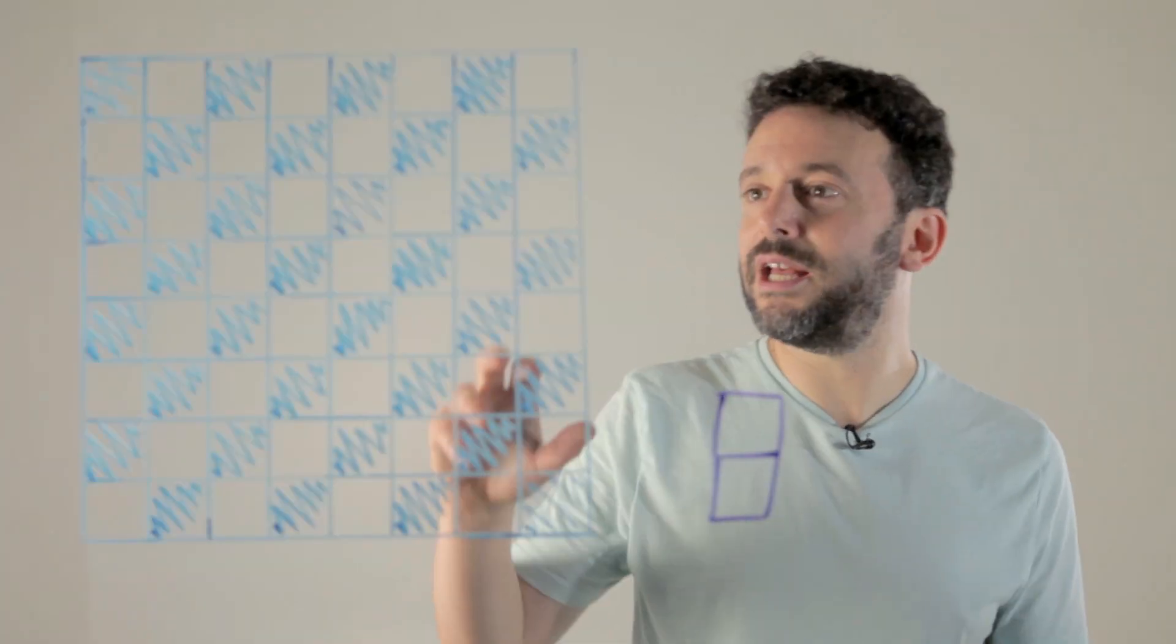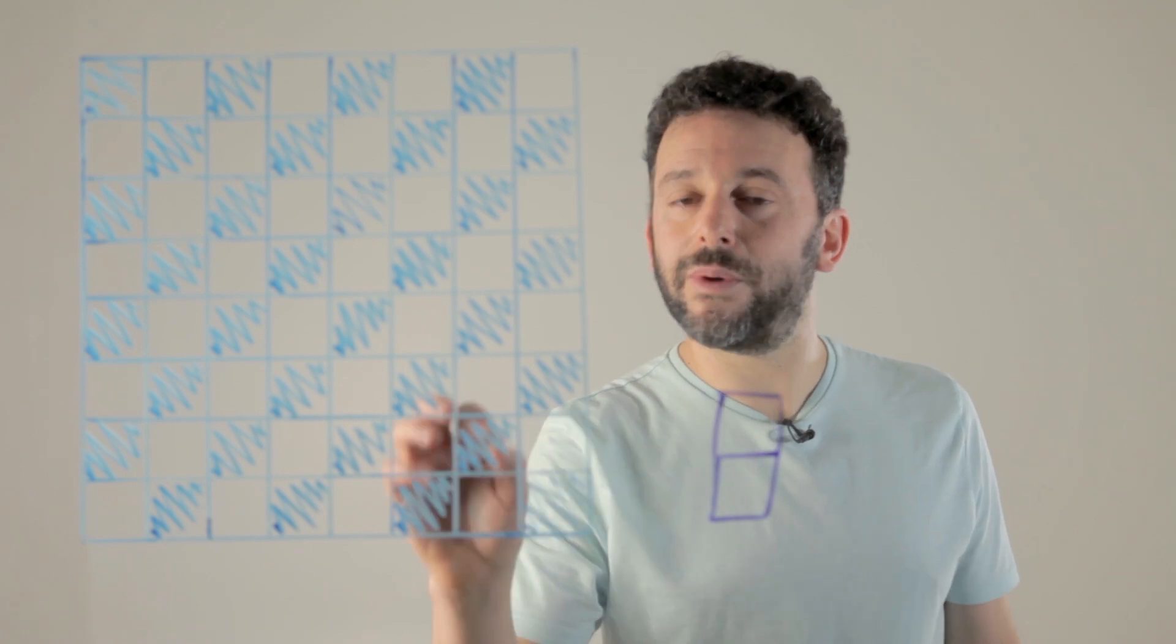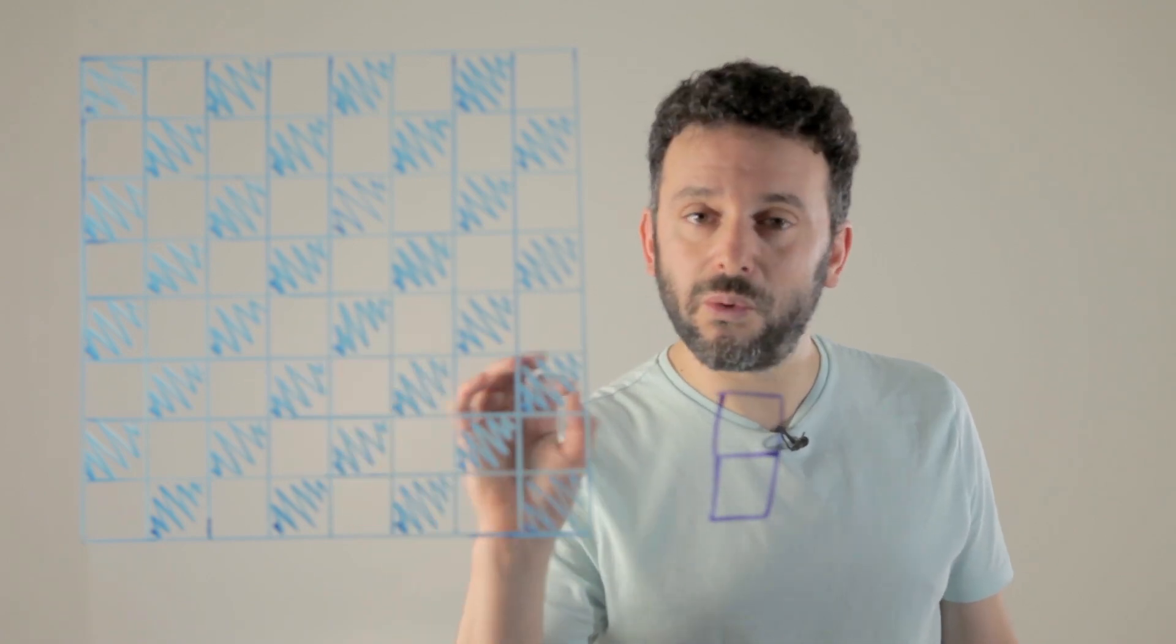For the second puzzle we have a brand new chessboard and now we are going to mutilate it by cutting away two squares, any two squares, one of each color.